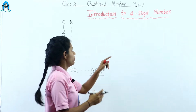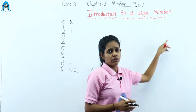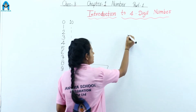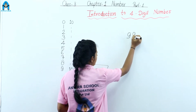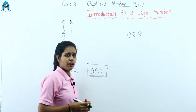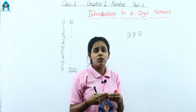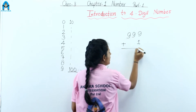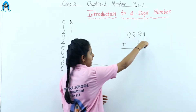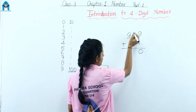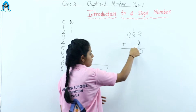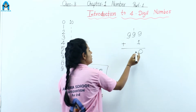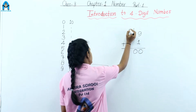Now in this part, we learn about 4-digit numbers. The greatest 3-digit number is 999. To find the first 4-digit number, what do we have to do? We have to add 1 to the greatest 3-digit number. We add 1, so it becomes 0 and we carry over. 9 plus 1 is 10, carry over.